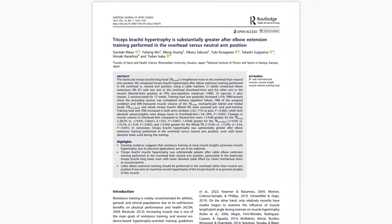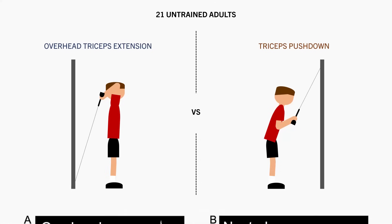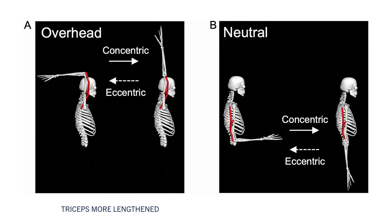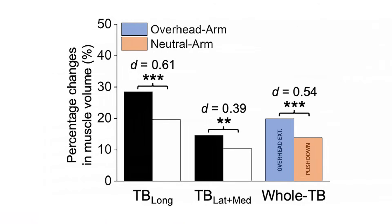Furthermore, this study compared the effects of overhead tricep extensions versus tricep pushdowns on triceps hypertrophy. The overhead extensions train the long head of the triceps in a more stretched state since they are lengthened due to the shoulder position, whereas tricep pushdowns train them in a more shortened state. It was found that overhead triceps extensions resulted in slightly superior overall increases in triceps muscle volume compared with tricep pushdowns.